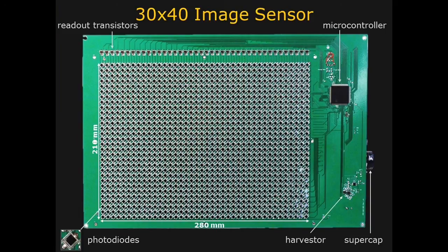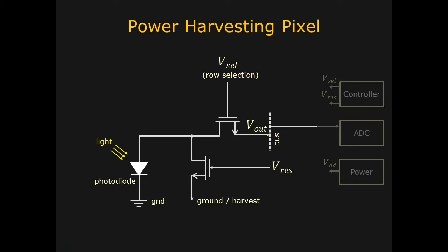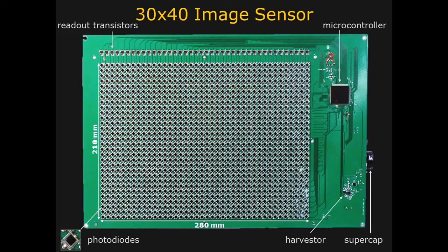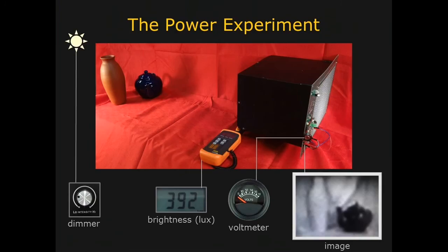On the back of the board, each photodiode was wired to circuit components based on the new pixel architecture. This sensor array was attached to a microcontroller, an energy harvester circuit, and a supercapacitor.